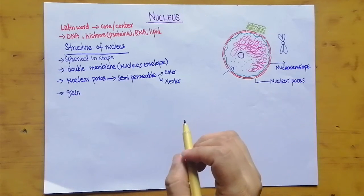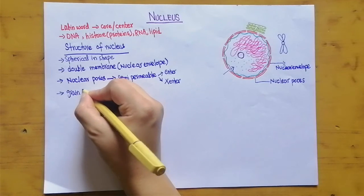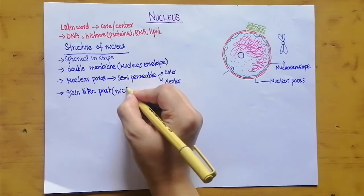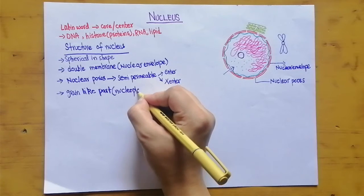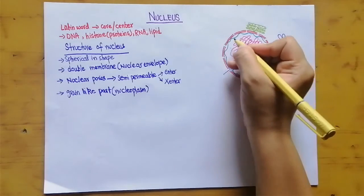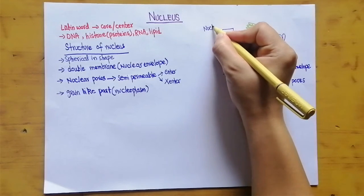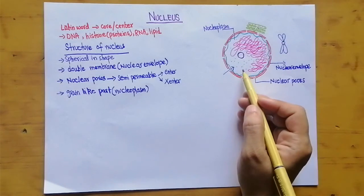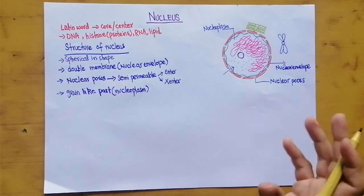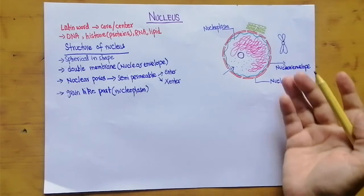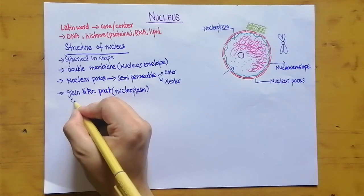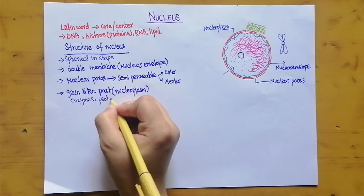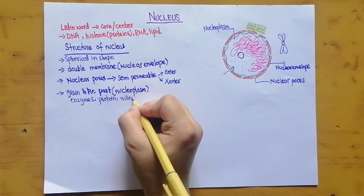The internal part of the nucleus is granular — it is not smooth but contains small grains. This internal part is known as the nucleoplasm. Just like the cytoplasm, the nucleoplasm contains many different nutrients to perform functions, including enzymes, proteins, and nucleotides.